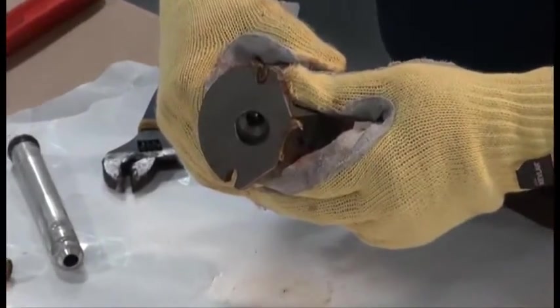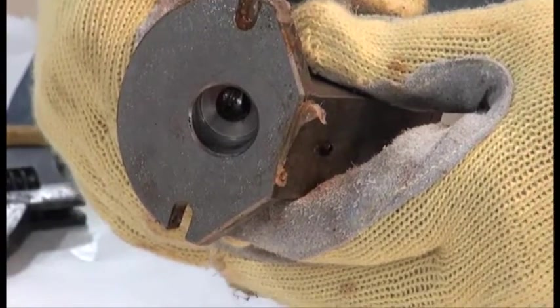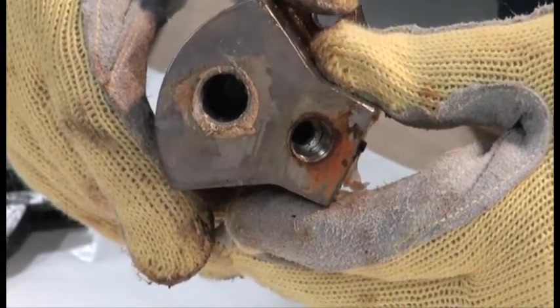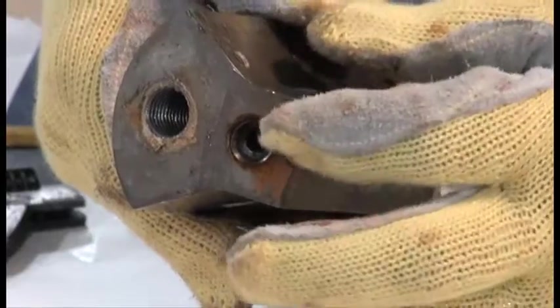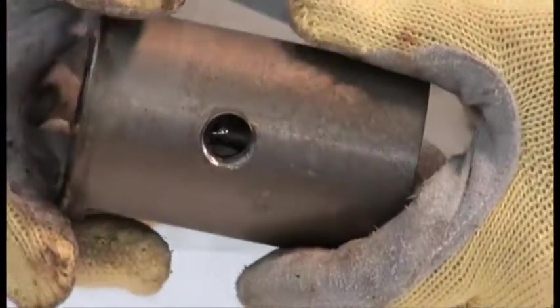All fittings should now be removed from the purge block. Clean all passageways in the block and all attached components to the greatest extent possible. The components are manufactured from brass and aluminum and therefore are not suitable for cleaning in a burnout oven. The entire purge block assembly is available from Dynatec as part number 114295.